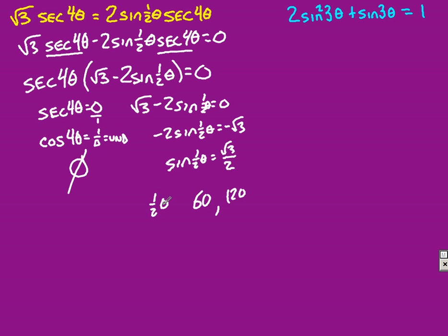So, that's what a half theta equals. Which means, to get theta, I multiply by 2, so I would have 120 and 240 as my possible answers. So, those are my only possible answers, then, are 120 and 240.